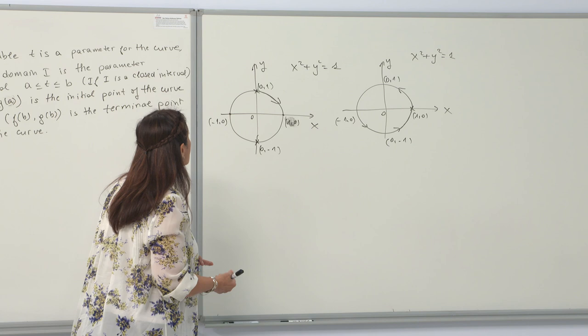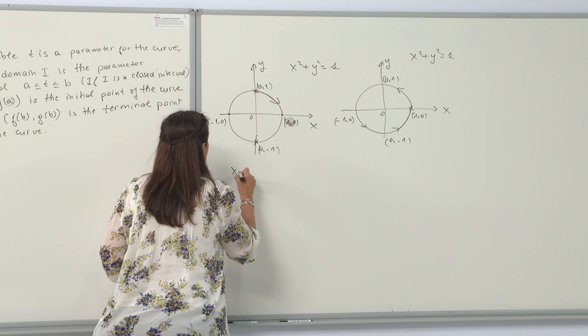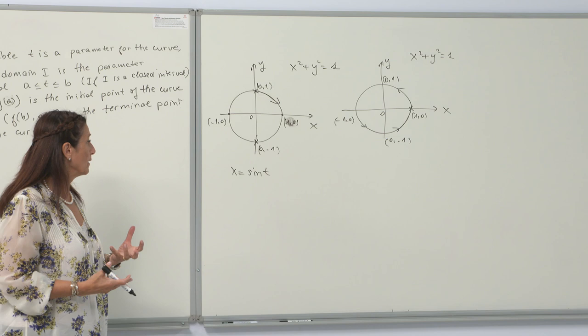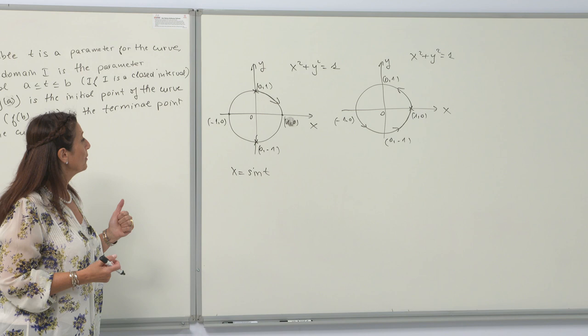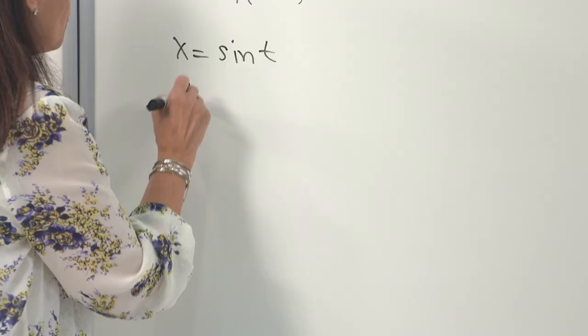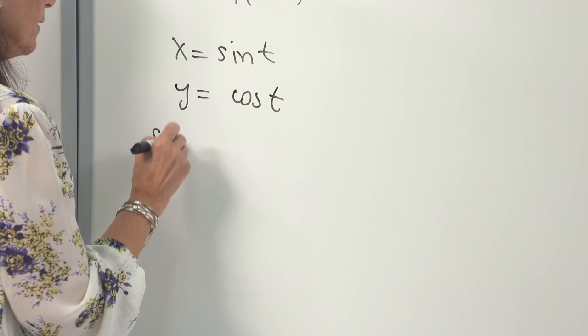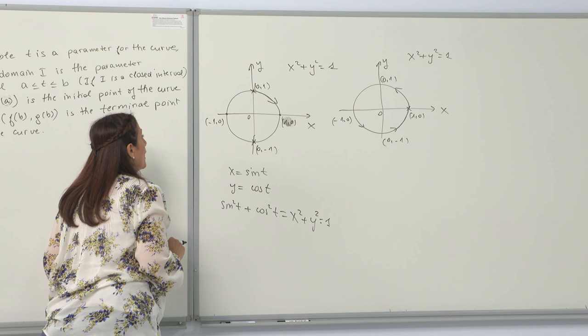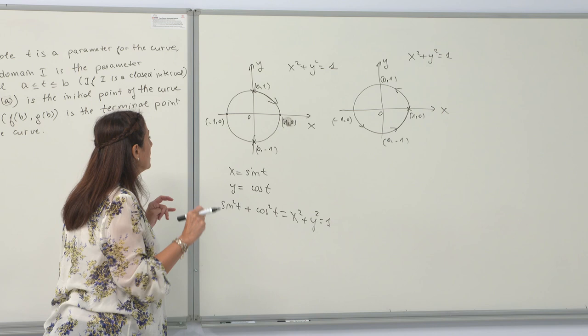For this problem, we need x equals sine t and y equals cosine t. Circles can be defined in terms of sines and cosines. One principle of parametric equations is to recover the Cartesian equation: sine squared t plus cosine squared t corresponds to x squared plus y squared equals 1. It satisfies the Cartesian equation. Then we need a parameter to describe the motion.